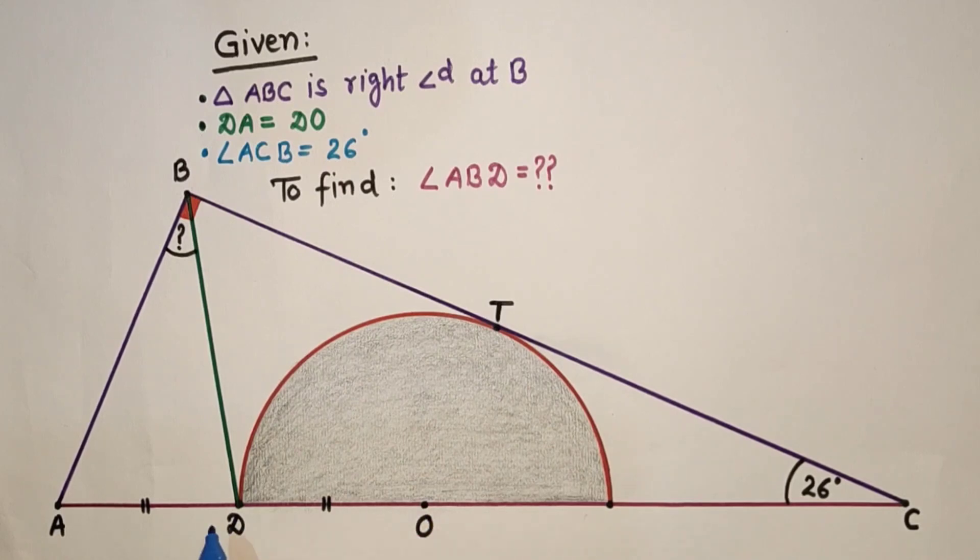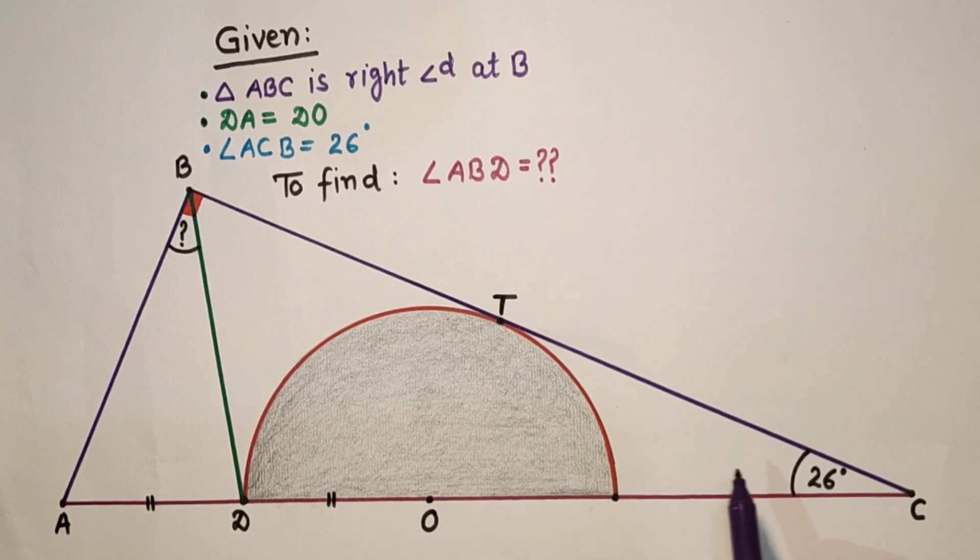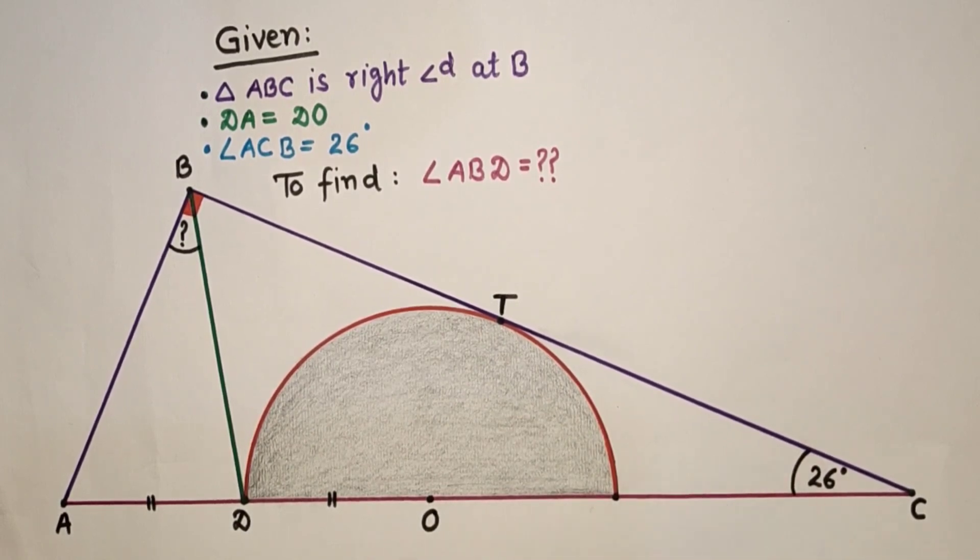This length OD is equal to DA. And we have to find the value of angle ABD. This question is a very interesting question based on 10th grade geometry.